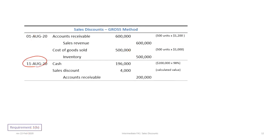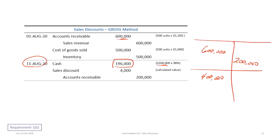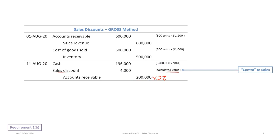On August 11th, the customer pays $200,000 of the total $600,000 receivable within the discount period, leaving a $400,000 receivable. The amount remitted is $196,000 due to the 2% discount. We credit accounts receivable for $200,000 — the pre-discount amount. The sales discount is $200,000 times 2% = $4,000, and it is a contra account to sales, reducing sales, as opposed to sales discounts forfeited which increases sales.